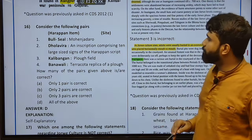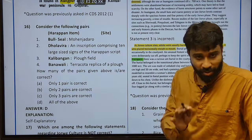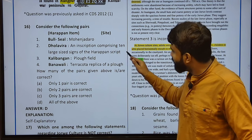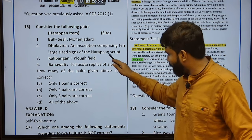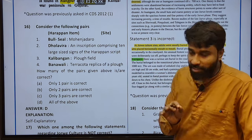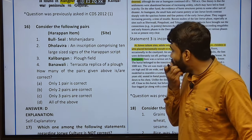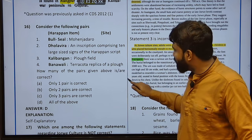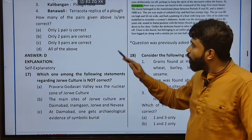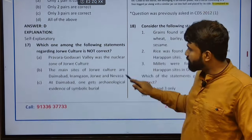Consider the following pairs: Bull seal — Mohenjodaro. Next, Dholavira — an inscription comprising ten large-size signs of Harappan script. Next, Kalibangan, Plophi, Banwali — terracotta replica of plow. All the above are correctly matched — there is no doubt about it. It is self-explanatory and easy, to give you note-making possibilities out of this question.